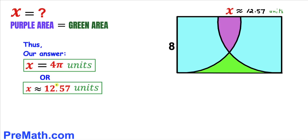So our x value turns out to be 4 pi units, which is approximately equal to 12.57 units. That's our final answer. Thanks for watching and please don't forget to subscribe to my channel for more exciting videos.